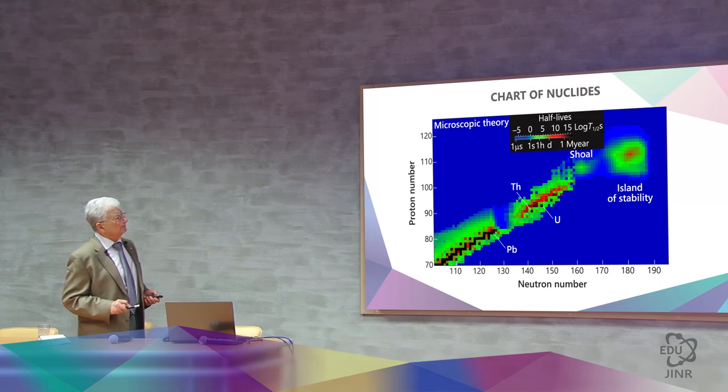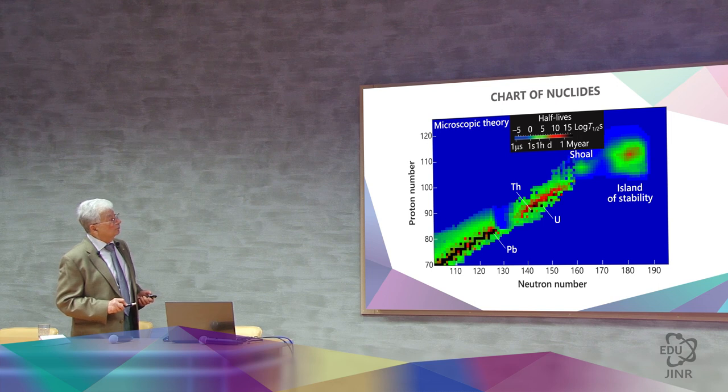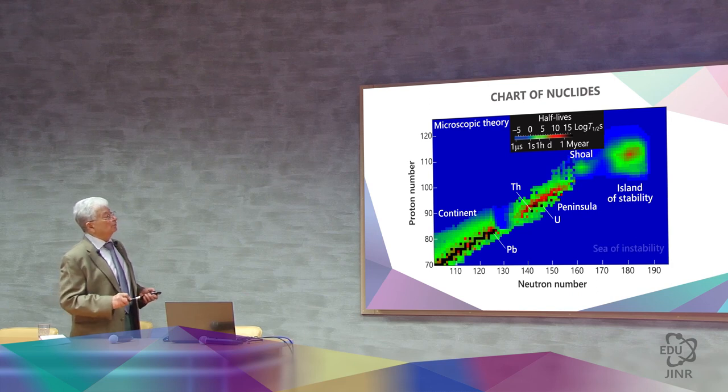You have probably heard this term many times before. If this is an island, then we call it a sandbank. Then what we had behind lead, thorium, uranium, forms a peninsula. And the fact that it is stable makes it a continent, and everything else is a sea of instability.